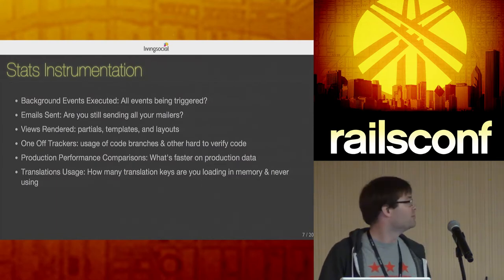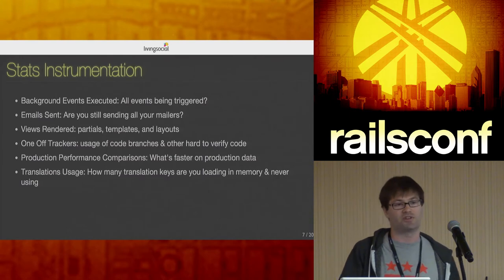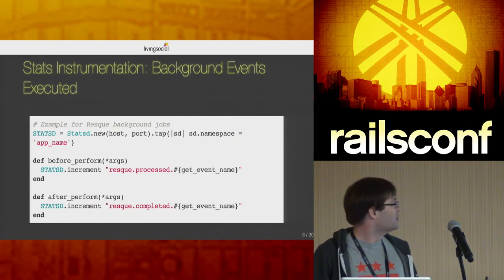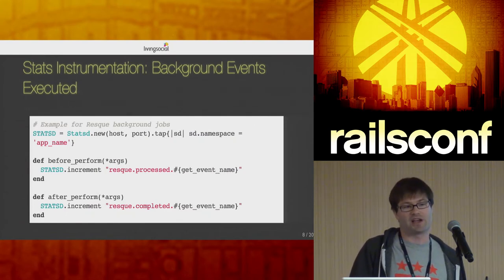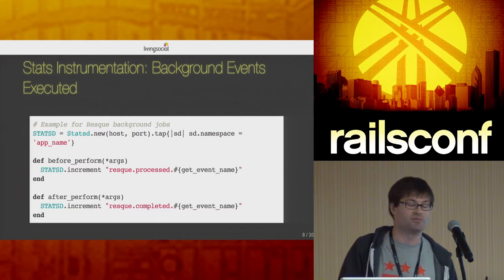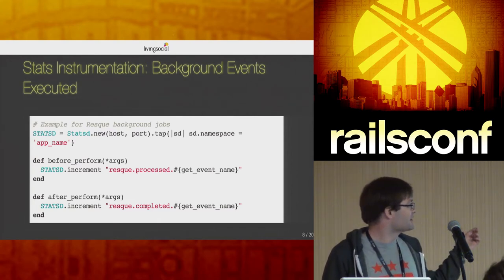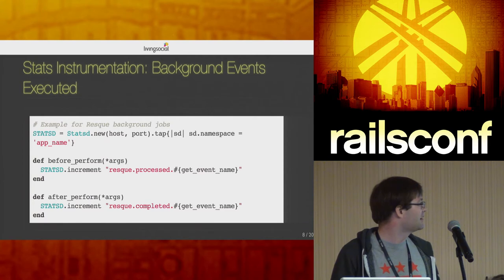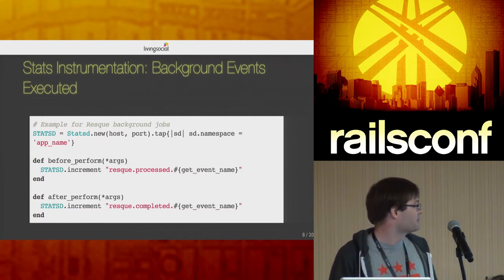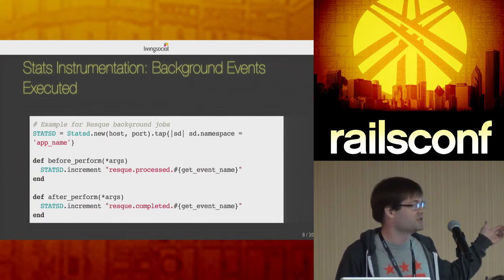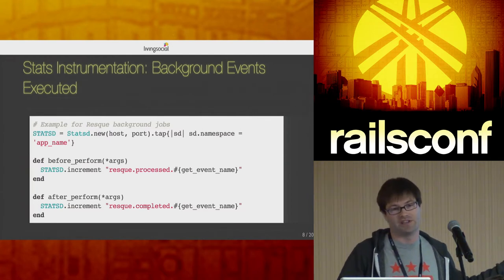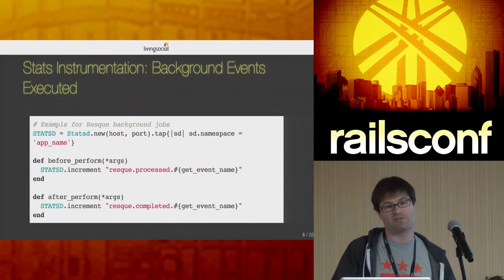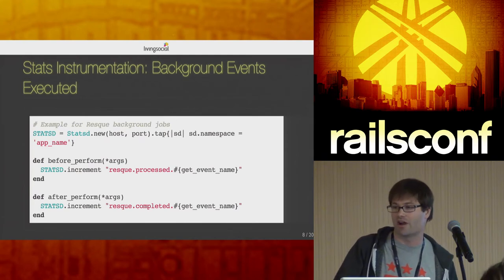Stats instrumentation: there are many things you can do with statsd to find code and understand what's happening. For background jobs, you want to know which jobs are executing, completing successfully, and how long they take. We have our own wrapper around background jobs — statsd before perform, after perform, with timers — giving nice Graphite graphs. You can also look at Graphite and see if a job is no longer ever being performed.